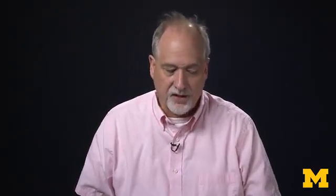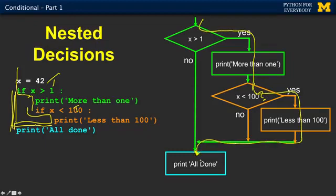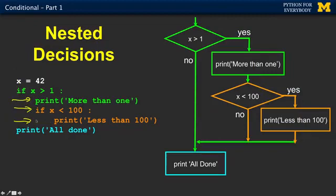Nested decisions: we can have an if within an if. In this case, x is 42. If x is greater than one — that's true — so we print this. If x is less than 100 — that's also true — so we go in and run this. Then we've de-indented twice, so this line lines up with the outer if. Start counting those indents and knowing how the de-indents work — this is indented once, this one is indented twice.